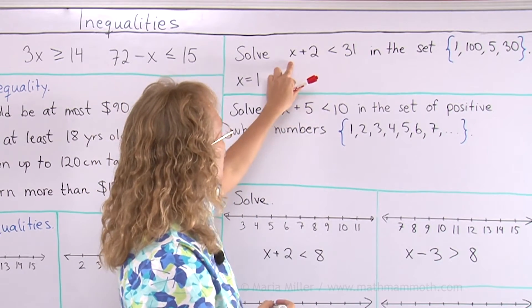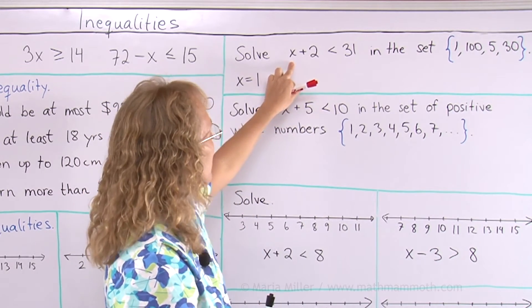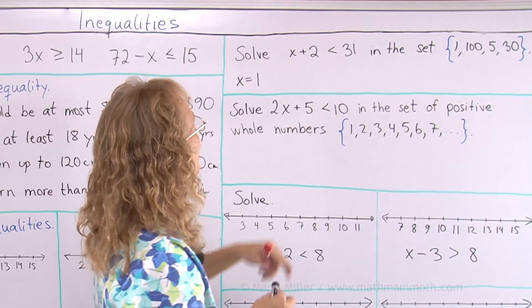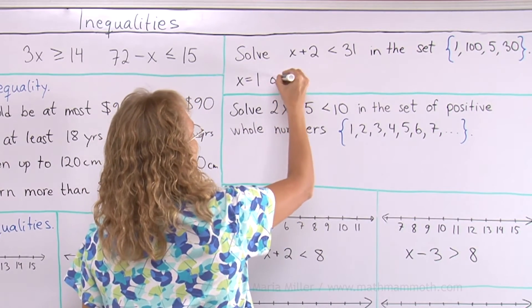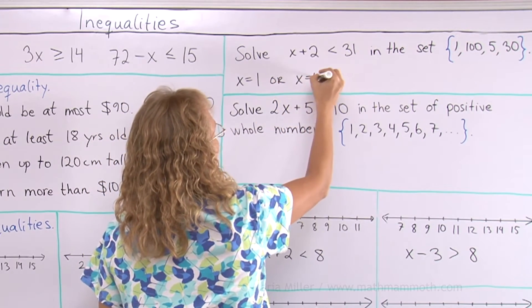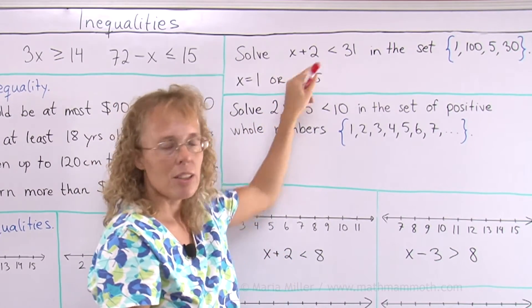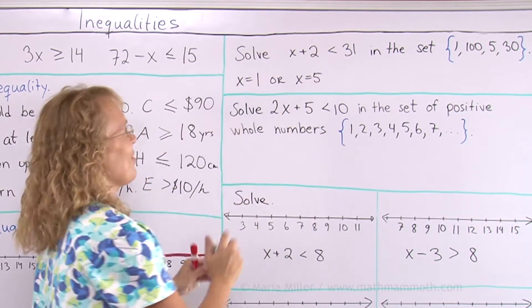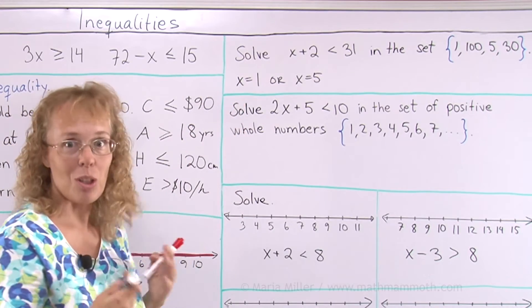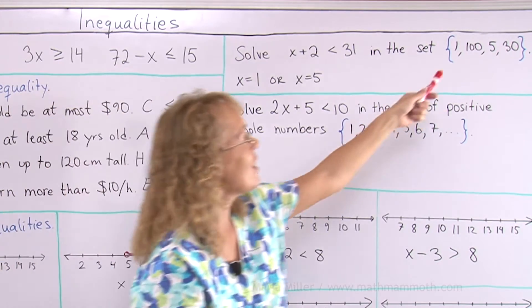Any others? Now 100 won't work. 5, 5 will work. So x could be 5, or x is 5. How about 30? 30 plus 2 is 32. No, 30 won't work. All done. This is the solution. There's two solutions to this inequality in this set.